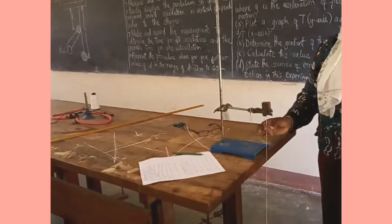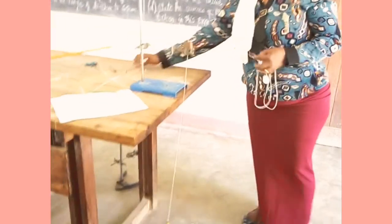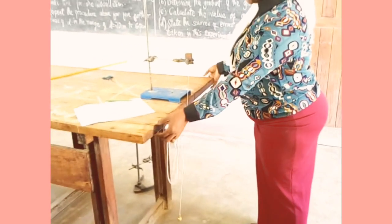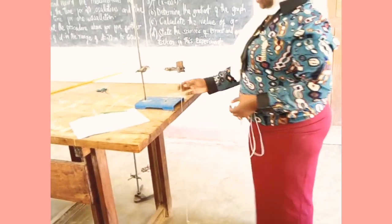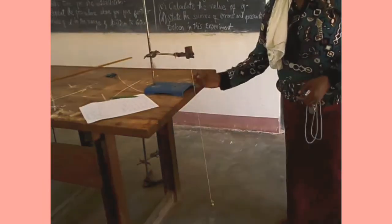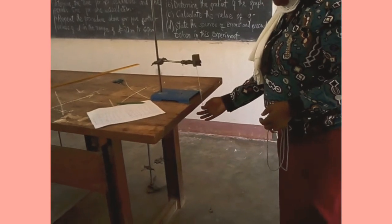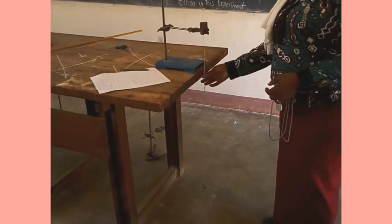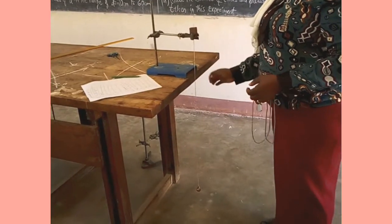Here is the setup of the apparatus. We have the retort stand, the board, a string together with the pendulum board. This is the horizontal rod, a bench as the stopper which is horizontal and perpendicular to the pendulum. The distance from the stopper to the point of suspension, this is D. According to here we have a distance D is equal to 20 cm.